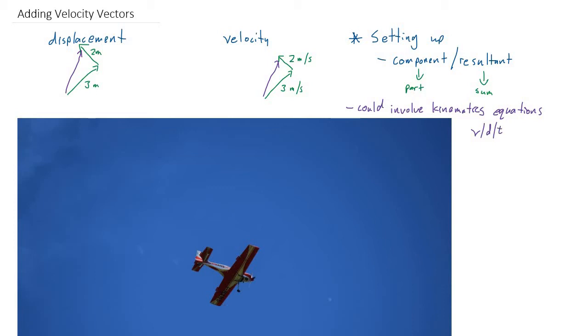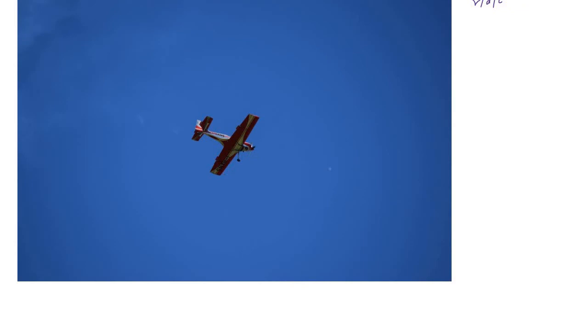You might wonder what realistic scenario could involve two components of velocity. There are basically two classic situations we'll look at: one is a plane in the wind, and the other is a boat in a stream or current.